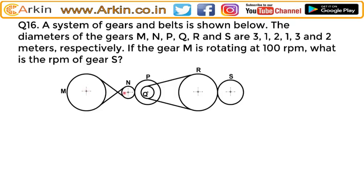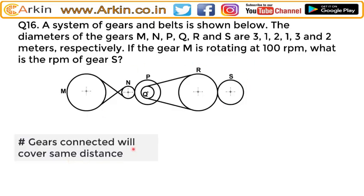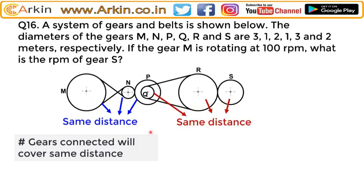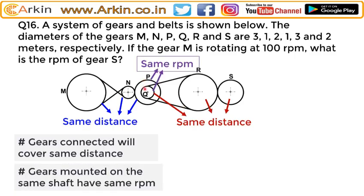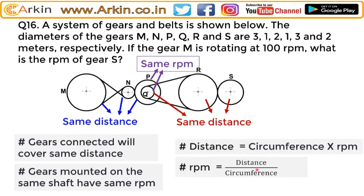A system of gears and belts is shown. The diameter is also mentioned, and the question is: if the RPM of gear M is 100, what is the RPM of gear S? If gears are connected by a belt, they cover the same distance. Gears mounted on the same shaft have the same RPM, so P and Q will have the same RPM. Distance equals circumference times RPM, and RPM equals distance divided by circumference.